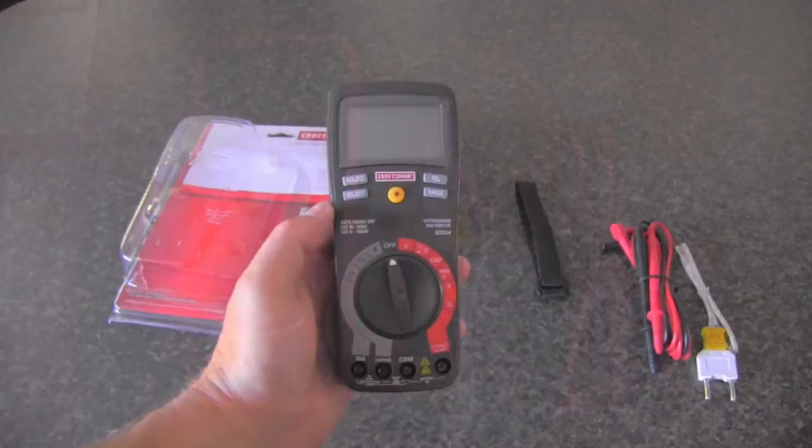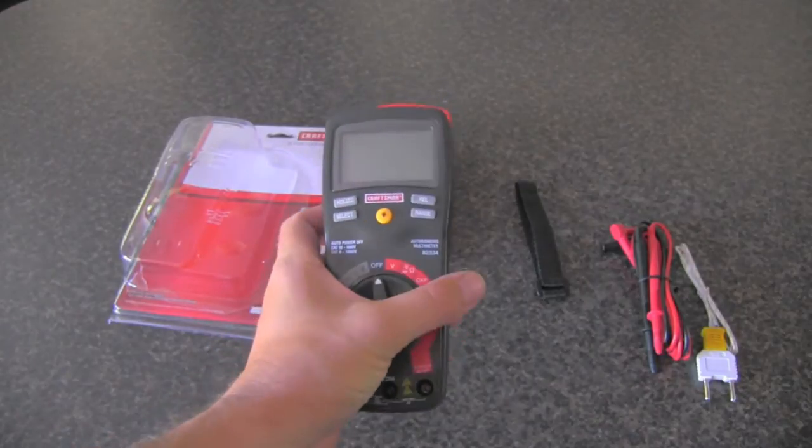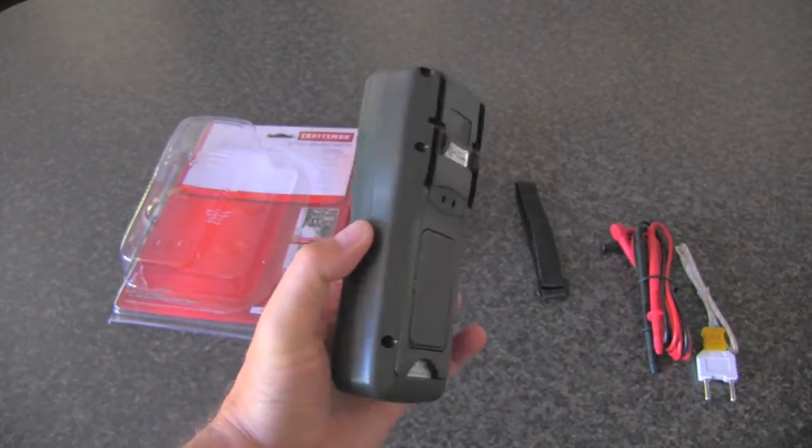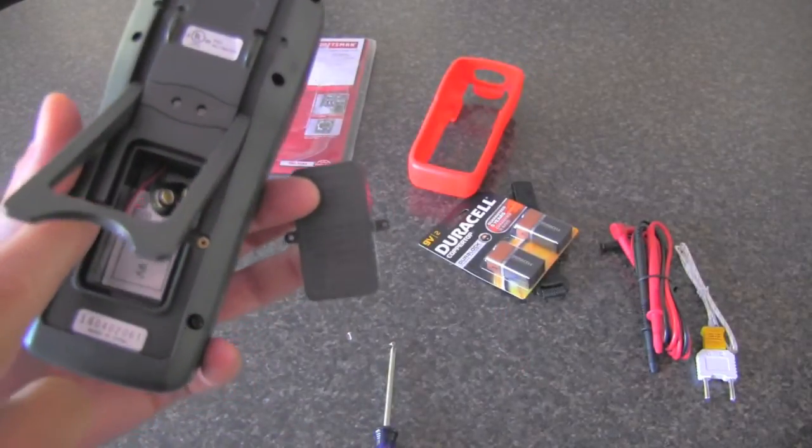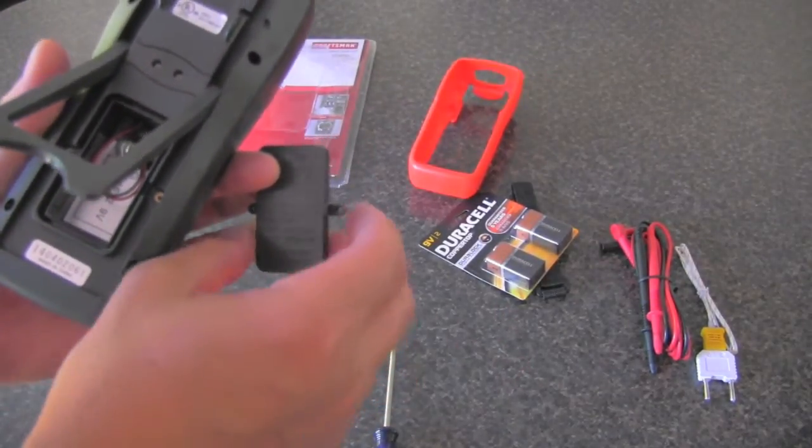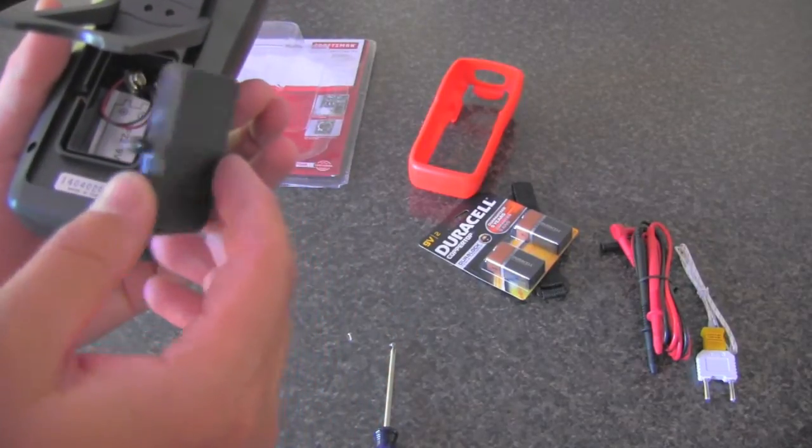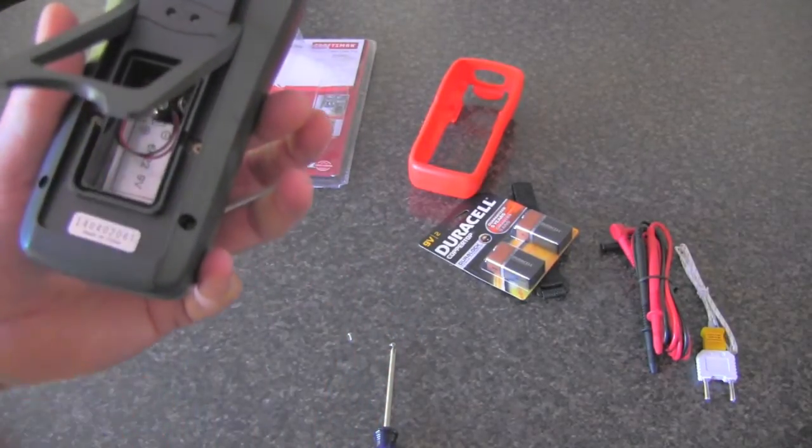The operating manual says it needs a nine volt battery, so let's see how we can get inside and install the battery. Removing these two bolts let me remove this cover and this is the compartment for the battery.